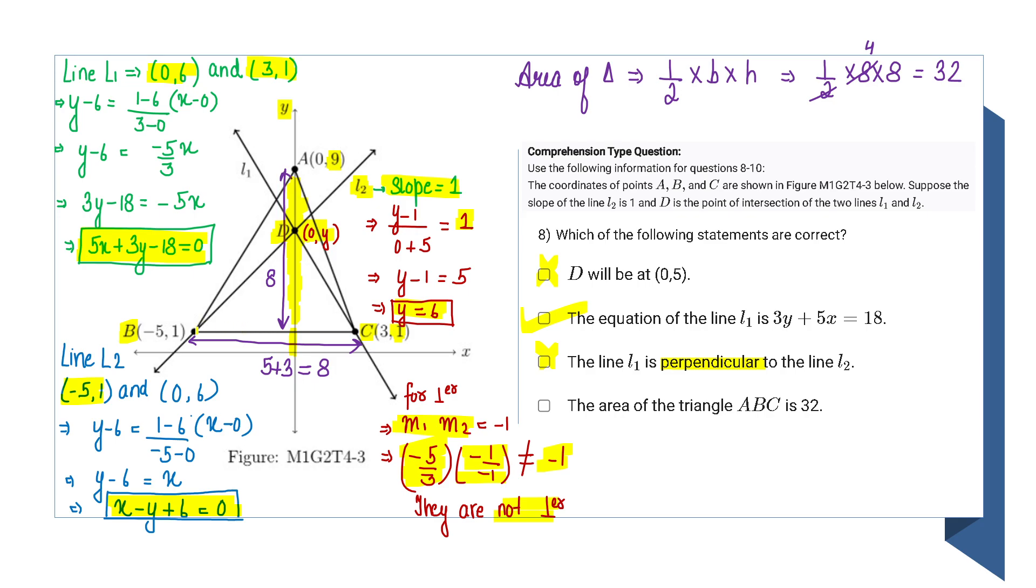Similarly, my base will be—from here to here it is 5 in terms of minimum distance. From origin to point C, it's 3 units away on the x-axis. So the total base will be 5 + 3, that is 8.